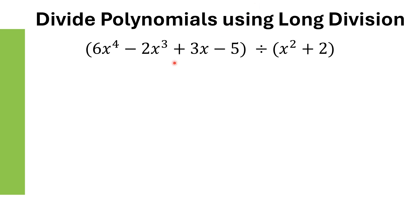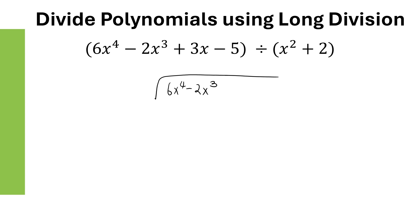For this problem, notice that we're missing the X squared term in the dividend and the X term in the divisor when the polynomials are written in descending order of exponents. To ensure everything aligns properly in long division, we add a placeholder term for the missing exponents. Rewrite the dividend as 6X to the fourth minus 2X cubed plus 0X squared plus 3X minus 5, and the divisor as X squared plus 0X plus 2.